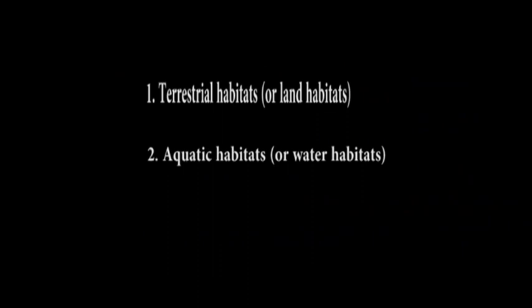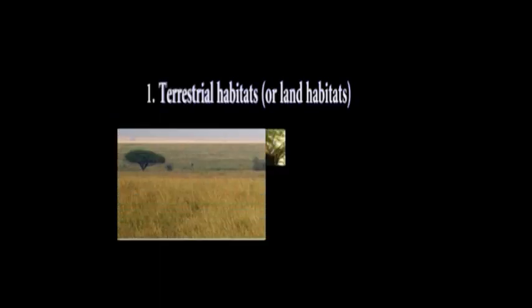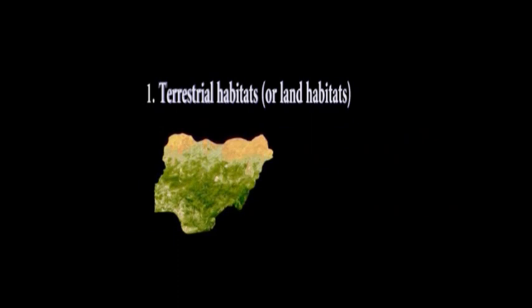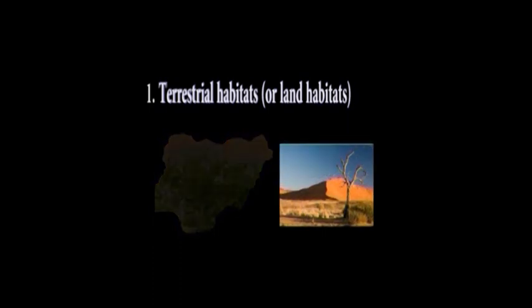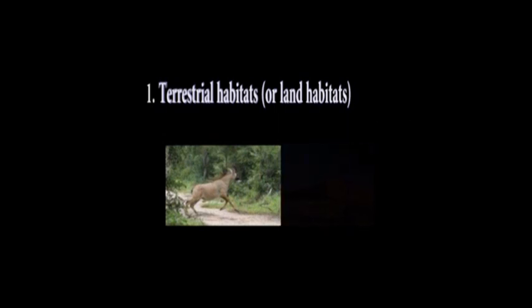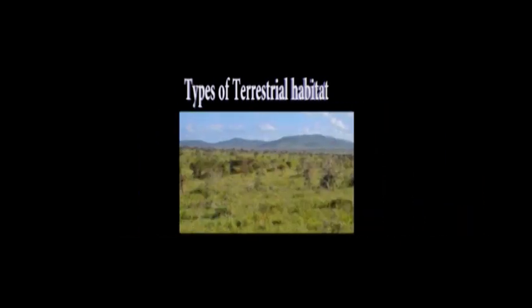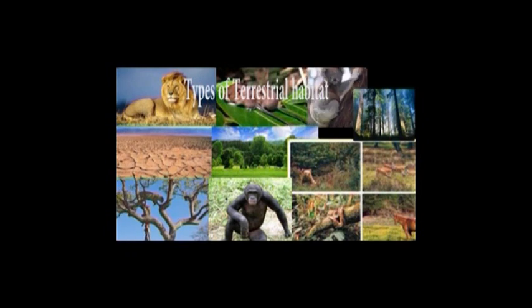One: terrestrial habitats, or land habitats. Two: aquatic habitats, or water habitats. Now let us take a closer look at each of these types of habitats. Terrestrial habitats refer to places on land. Plants or animals found on the land are called terrestrial plants or animals. In Nigeria, as you travel from one region to another, you will notice changes in the vegetation and differences in the types of plants and animals found in various parts of the country. There are different types of terrestrial habitats: rainforests, swamp or wetlands, savannah, grassland, and desert places. Now look at the pictures of different types of terrestrial habitats. Can you identify the plants and animals found there?